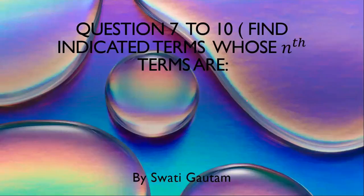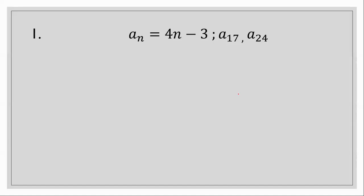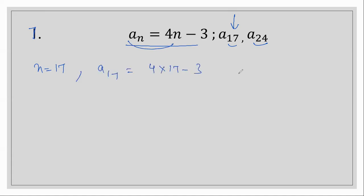Let's discuss question number 7 from the chapter Sequences and Series. The formula an is given, and we have to find the 17th term and the 24th term. When n equals 17, a17 equals 4 times 17 minus 3. First we multiply: 17 times 4 is 68, minus 3, which equals 65.